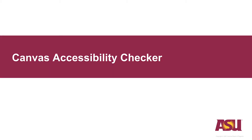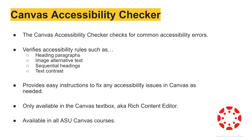First, we will discuss the Canvas Accessibility Checker. The Canvas Accessibility Checker is a tool available in Canvas that can be used to review the accessibility level of content on a page in a Canvas course. It will check for common accessibility errors such as paragraph headings, alternative text for images, and contrast in text color and size. This tool is only available to check content in the Rich Content Editor in Canvas and cannot check for accessibility errors in course files or content outside of that environment, such as websites or third-party tools.